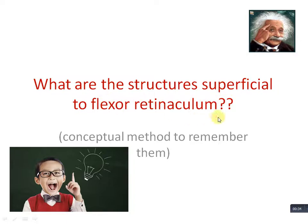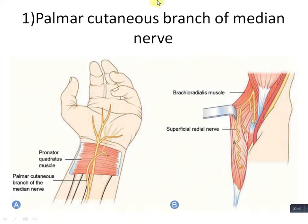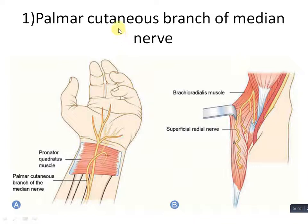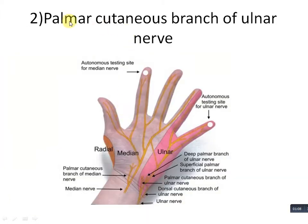There are basically five superficial structures. The first one is the palmar cutaneous branch of the median nerve. This is a cutaneous branch, meaning it passes almost at the skin level, so it is a very superficial structure. The flexor retinaculum is part of deep fascia, so it is obvious that this cutaneous branch is going to pass over the flexor retinaculum.